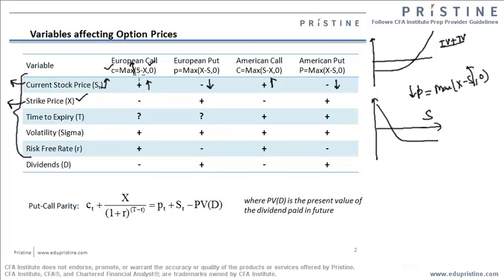If you see the intrinsic value formula, as S is increasing, the value of call is increasing. Now if X is increasing, which is after this negative sign, the value of the call should decrease. So as the strike price increases, value of the call will decrease. Same holds true for American call. And exactly the opposite is for the put — a positive relationship.